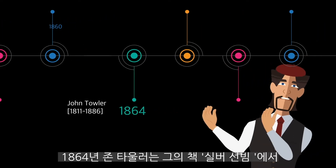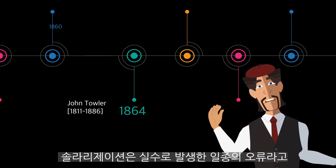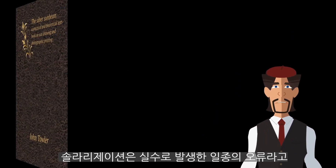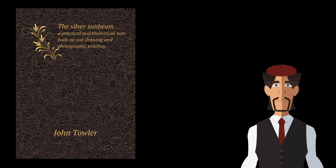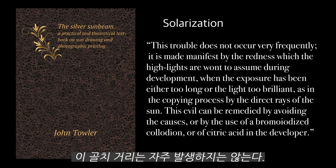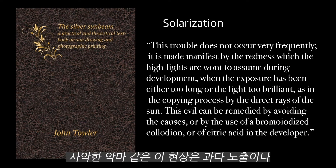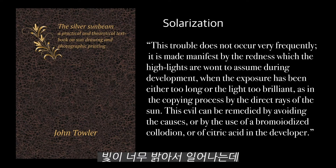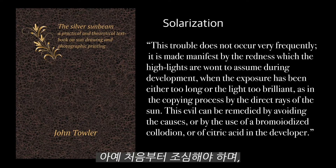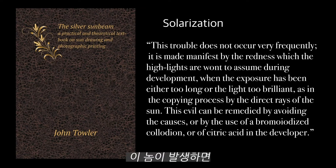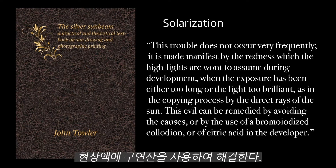In 1864, John Toler dismissed solarization as an imperfection or error in his book The Silver Sun Beam: "This trouble does not occur very frequently. It is made manifest by the redness which the highlights are wont to assume during development, when the exposure has been either too long or the light too brilliant, as in the copying process by the direct rays of the sun. This evil can be remedied by avoiding the causes, or by the use of bromidized collodion, or of citric acid in the developer."